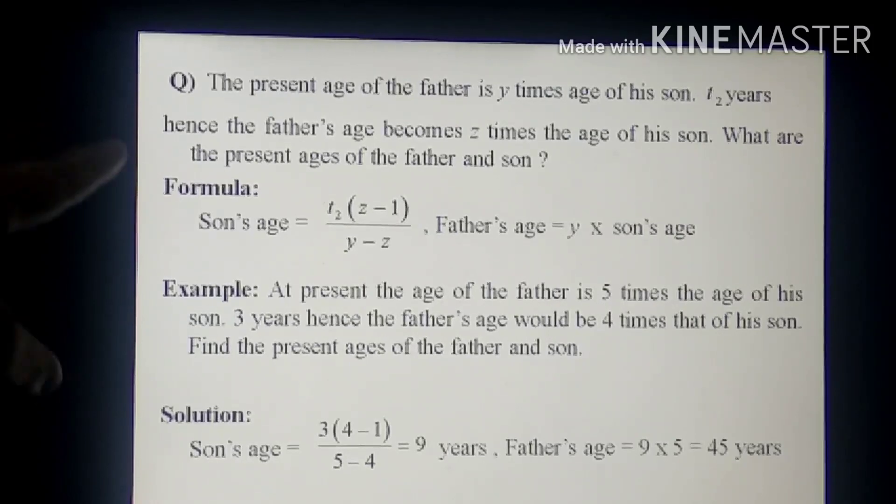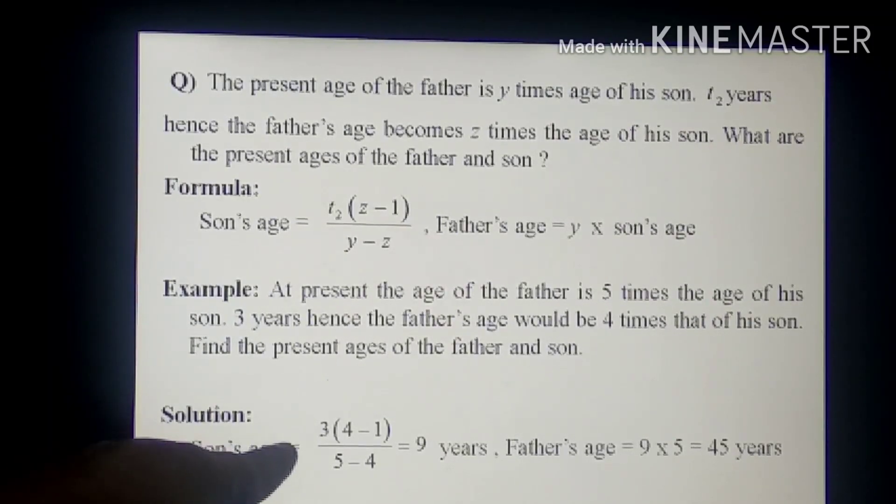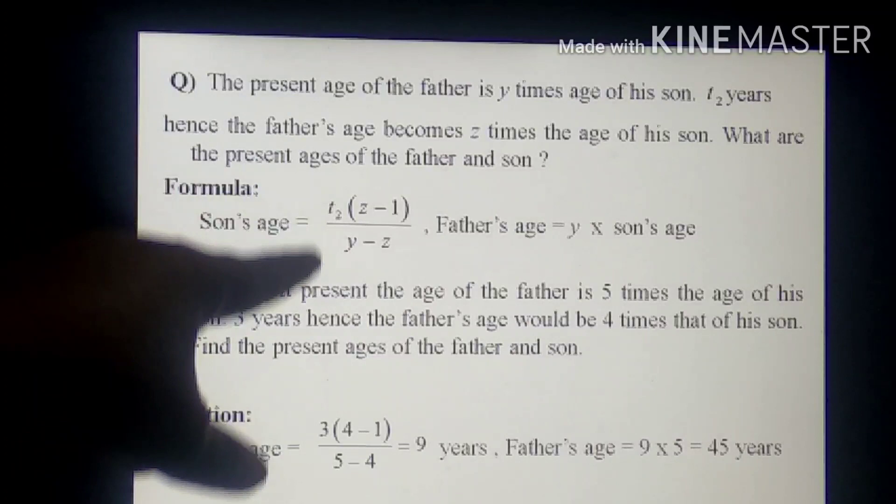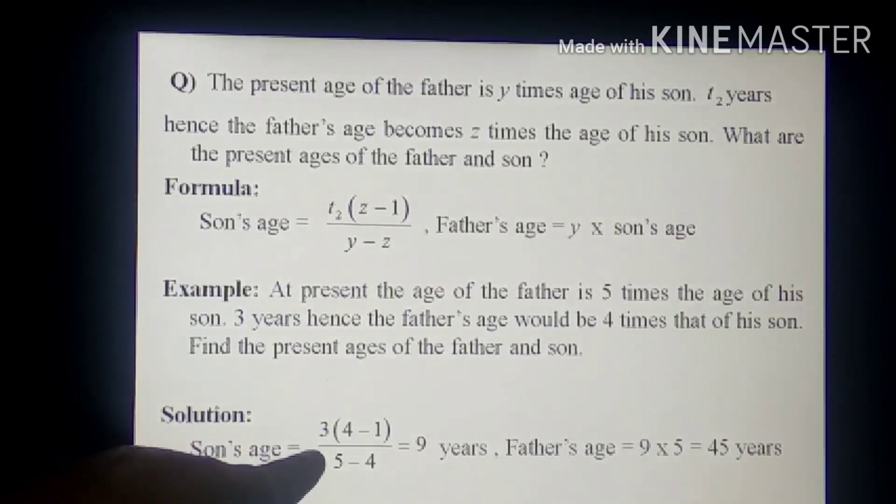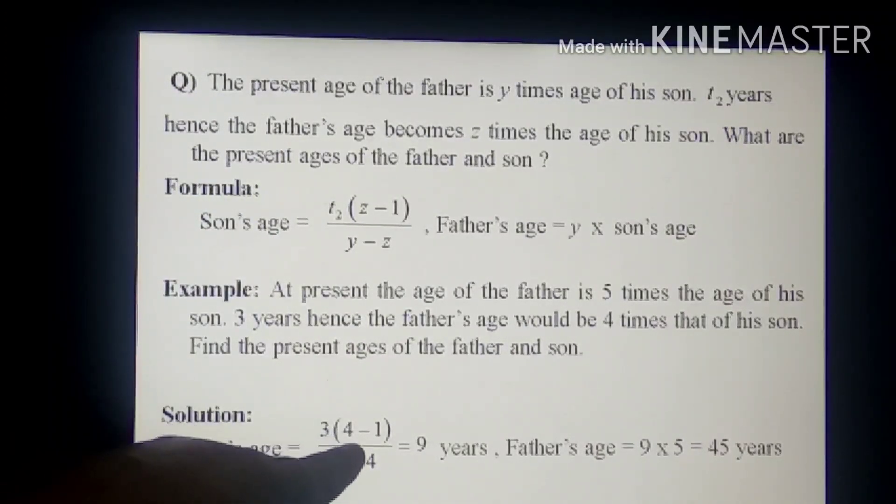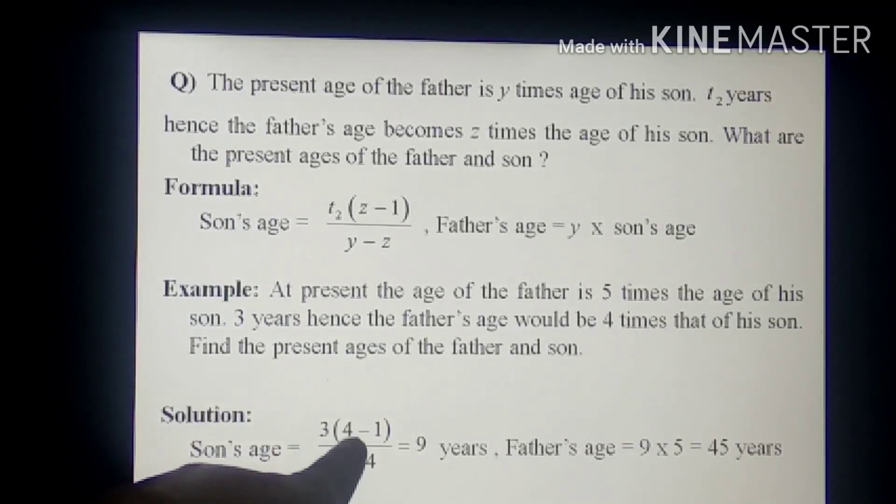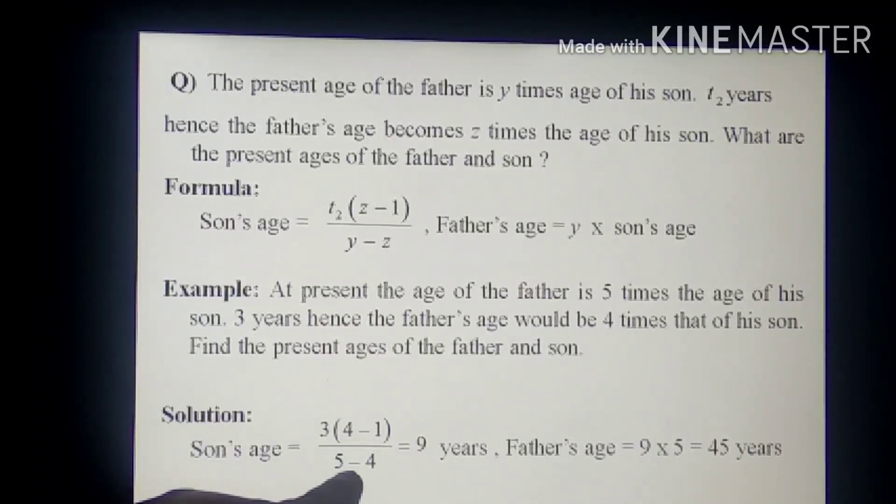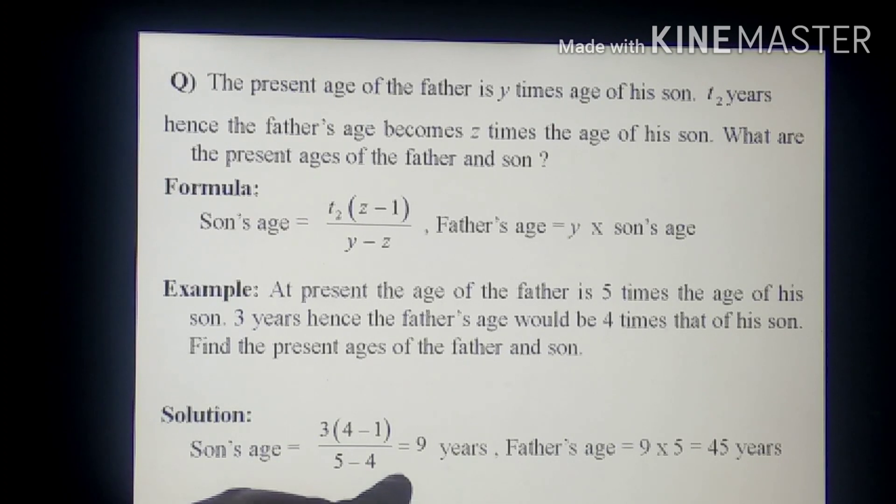So using the formula, the son's age becomes 3. Here T2 equals 3. If you compare then Z here equals 4 minus 1. Y equals 5 minus 4.